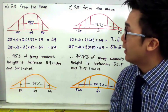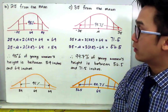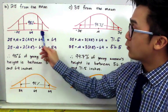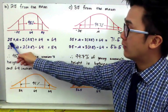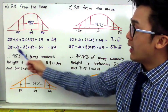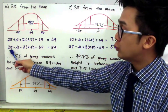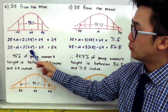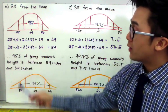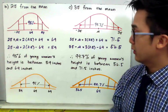To find the proportion of women within 2 standard deviations from the mean, we find the range of values for heights falling under this category. The upper limit is 2 times 2.5 plus 64, which gives 69 inches. The lower limit is 2 times 2.5 minus 64, which is 59 inches. Therefore, 95% of young women's height is between 59 inches and 69 inches based on a normally distributed curve.